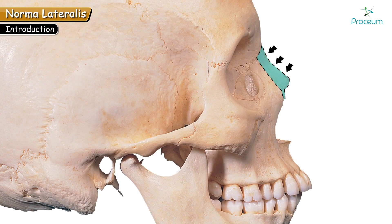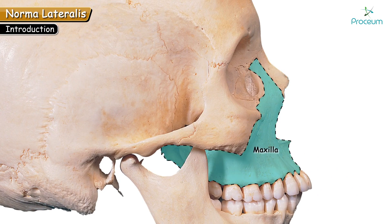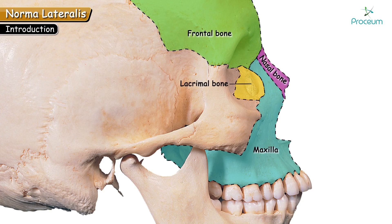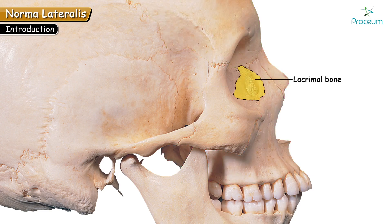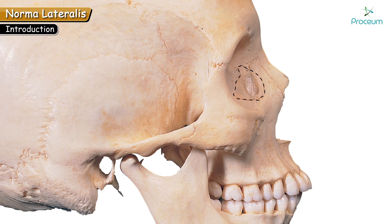Let's see the other bones. The nasal bone is present anteriorly. Next to the nasal is the maxilla, also known as the upper jaw, which articulates with the nasal, frontal, and lacrimal bones. Next is the lacrimal bone. If we see on the medial side of the orbit, the depression present there is the lacrimal fossa, which is formed by the lacrimal bone and is bounded by anterior and posterior lacrimal crests.